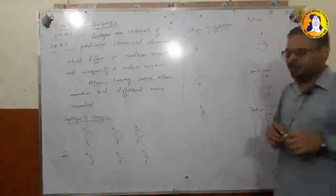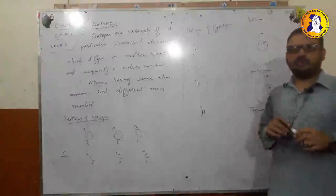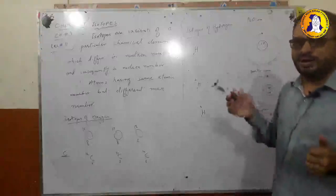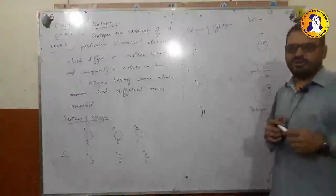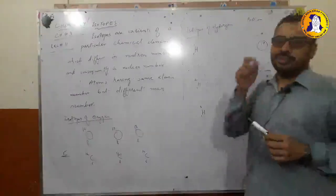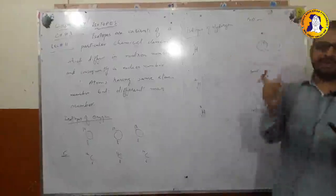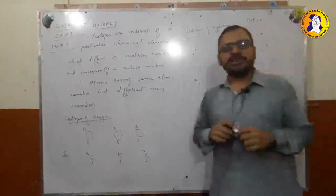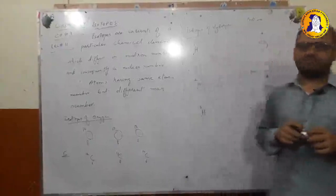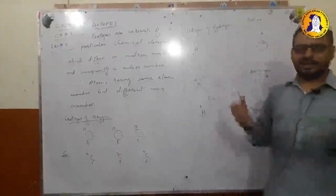As far as mass number is concerned, it is possible for two different elements to have the same mass number. This is because in an atom the atomic number never varies, but the number of neutrons may vary within an atom of the same element.